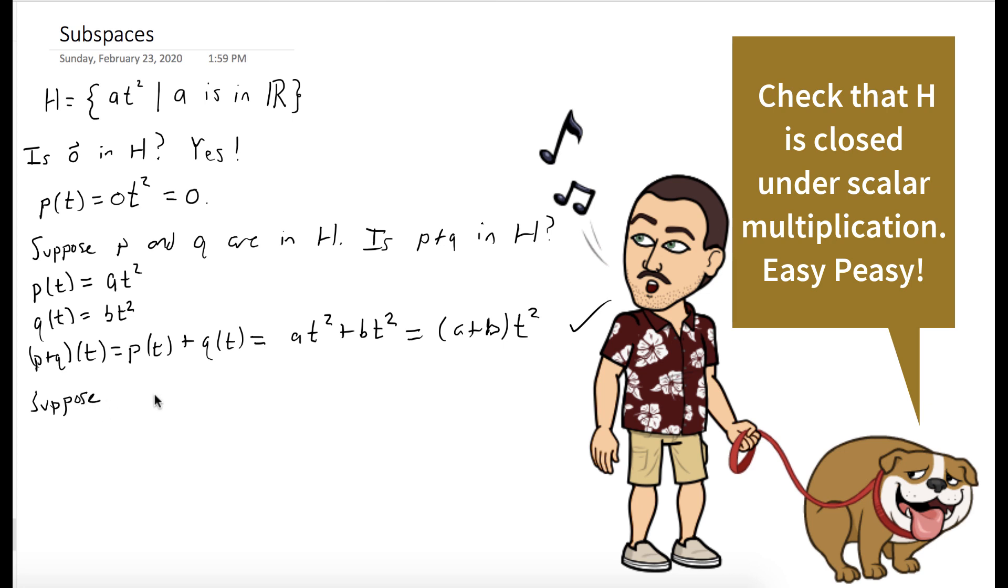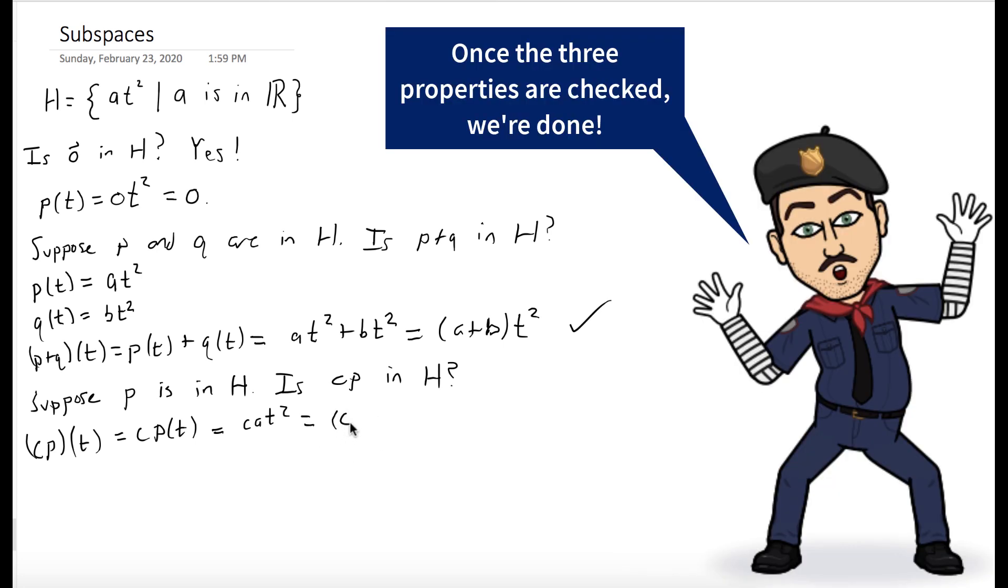Now we just have to check that it's closed under scalar multiplication. We'll take an arbitrary polynomial in H and multiply it by a scalar. So we get c times at², which equals (ca)t². Well, ca is a real number, so it's in H.